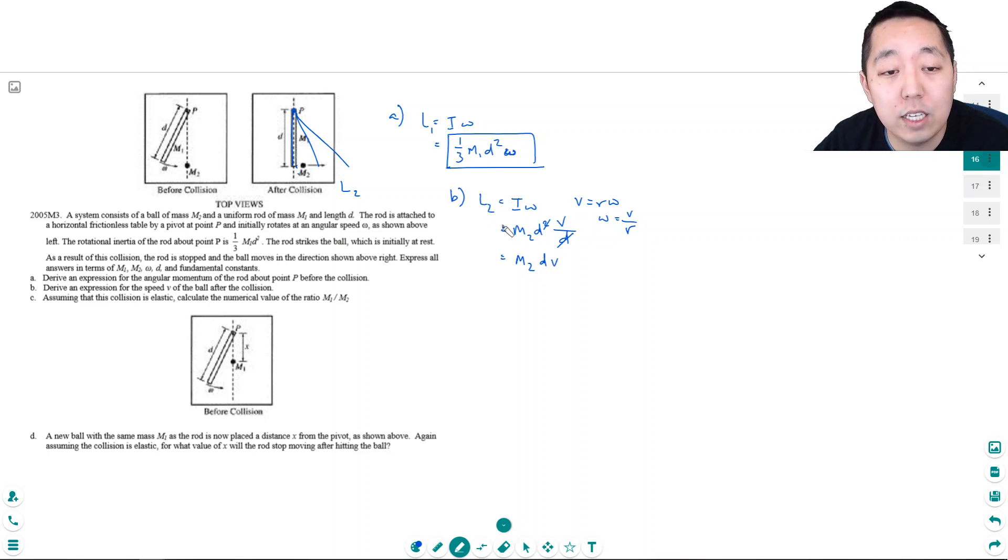So this is the angular momentum of this ball relative to this point of rotation. And now we're going to set them equal to each other. 1 third m1 d squared omega is equal to m2 d v. And I can solve for v. One of these d's will cancel and I divide by m2. So I get v is equal to 1 third m1 over m2 d times omega.